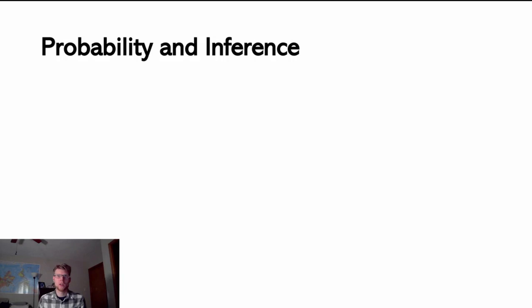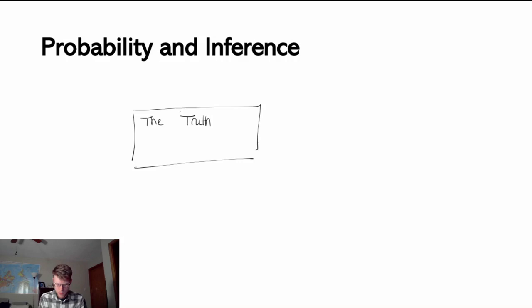Before we get into this topic, I want to start with a visual thinking about both probability and inference and how they fit in a bit of a cycle. Starting with the box on the left, think of this as representing the truth — or parameters, or this true distribution. When we're working with variables, there exist true distributions and true parameters for the variables that we work with.